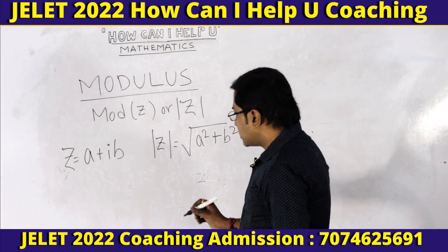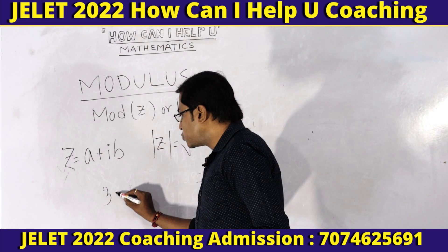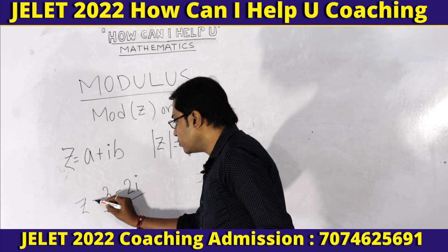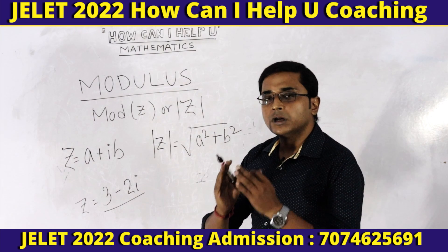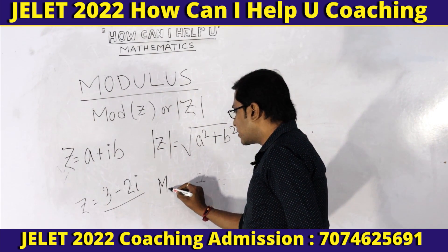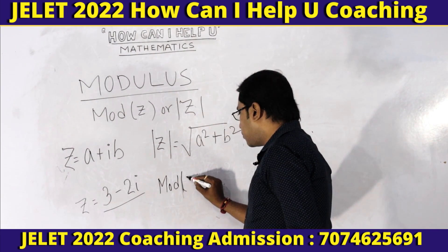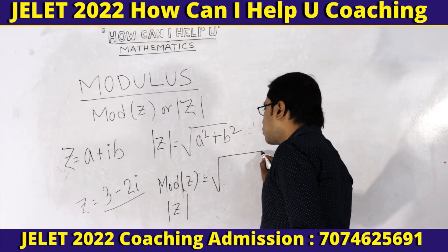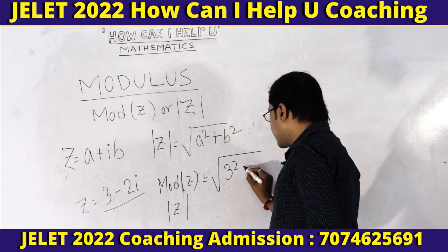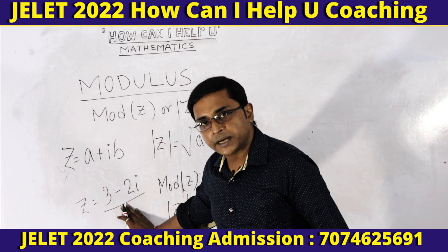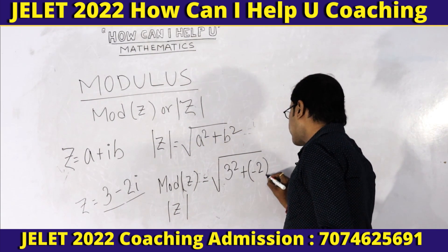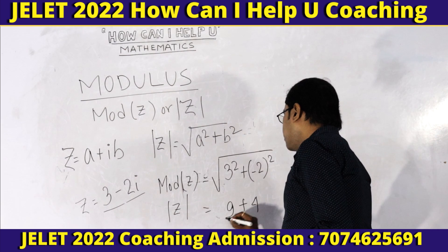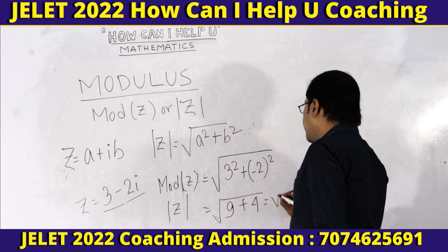Now a normal example: suppose z equals 3 minus 2i. The modulus z equals root over real part squared plus imaginary part squared, which is root over 3 squared plus minus 2 squared. 3 squared is 9, minus 2 squared is 4, so 9 plus 4 gives root 13.